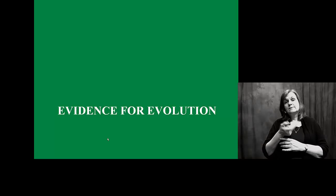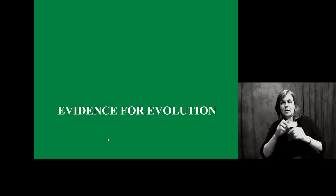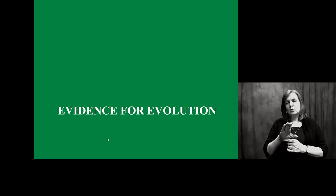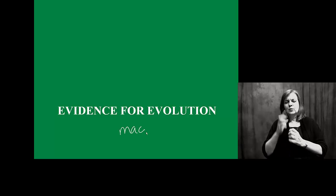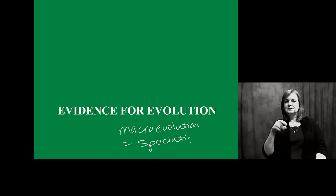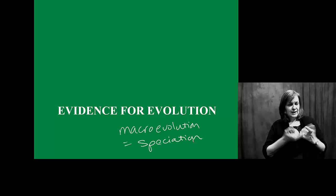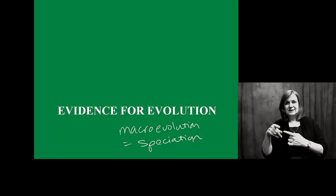I want to spend a few minutes thinking about evidence for evolution. We're going to come back to all of these things in micro and macro evolution. In particular, we'll focus on a lot of these processes in macro evolution, which is equivalent to speciation. How much change has to occur in order for a species to become different and isolated? We'll look at this.